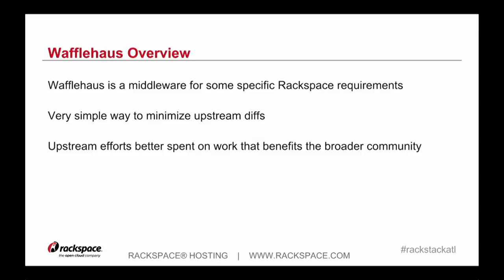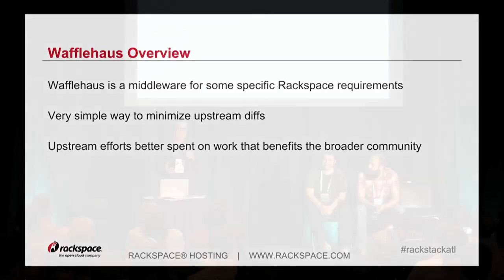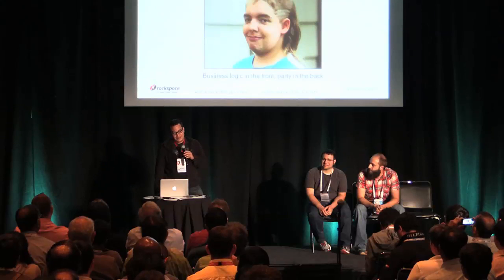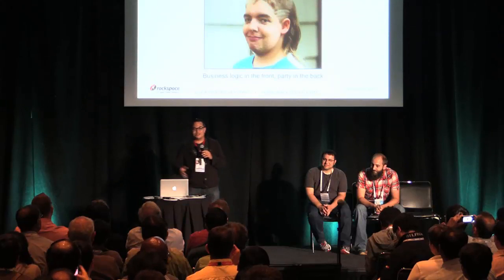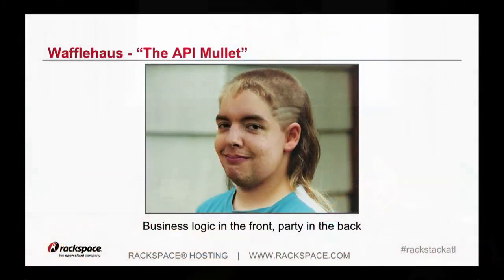At Rackspace we kind of jokingly call it the API mullet — it's business logic in the front and a party in the back. It really does help with dealing with the business logic for any company, but it also allows us to do all the stuff we've got to do in the back end.